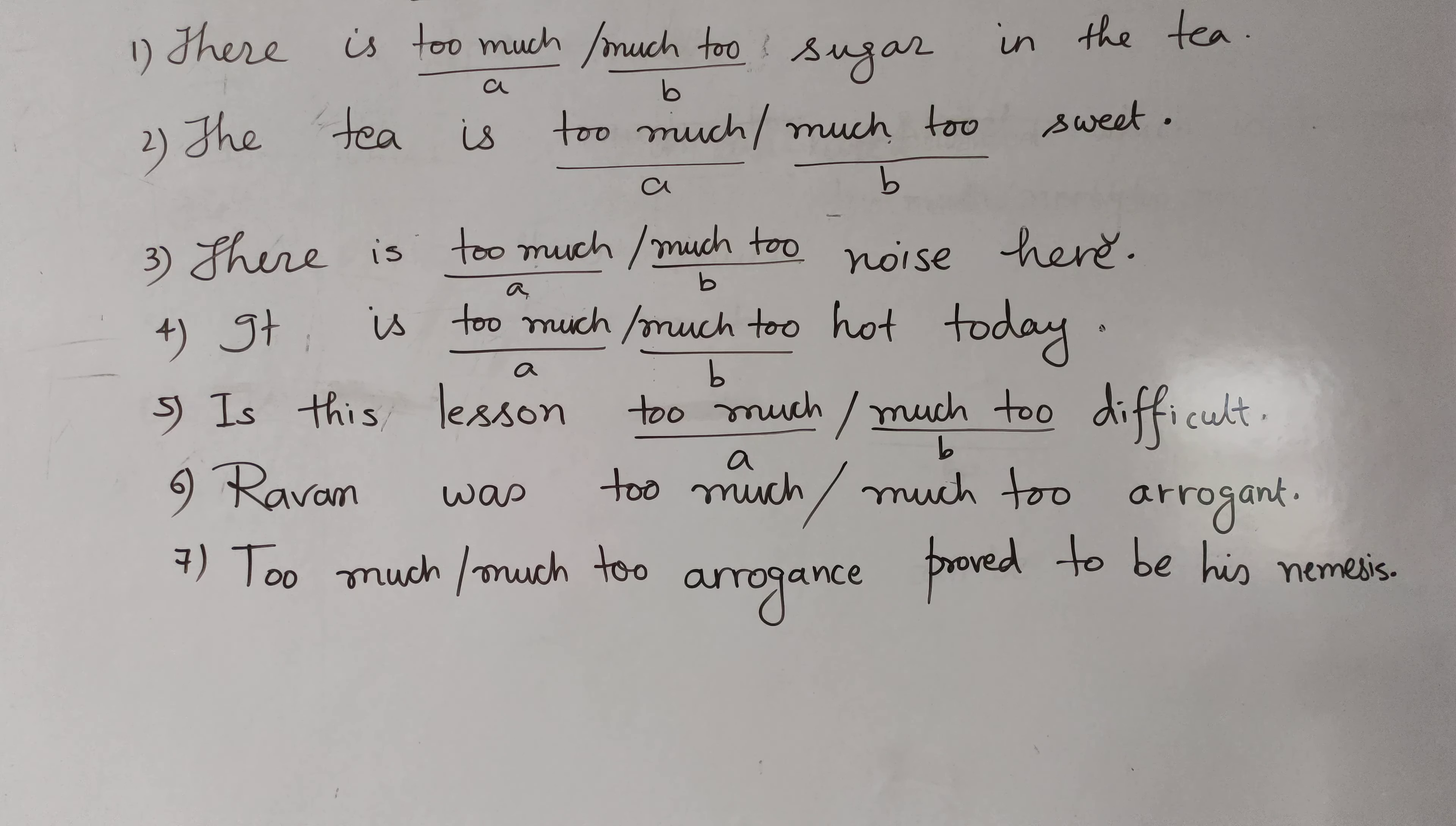Number 6. Ravan was too much, much too arrogant. What will you choose? Ravan was much too arrogant. Ravan zarurat se zyadha ahankari tha. Ghamandi tha.